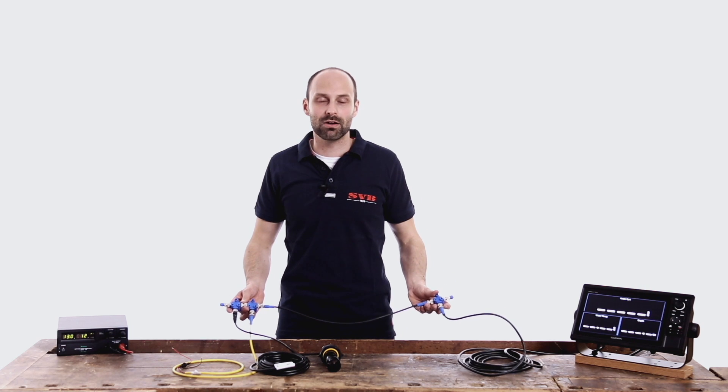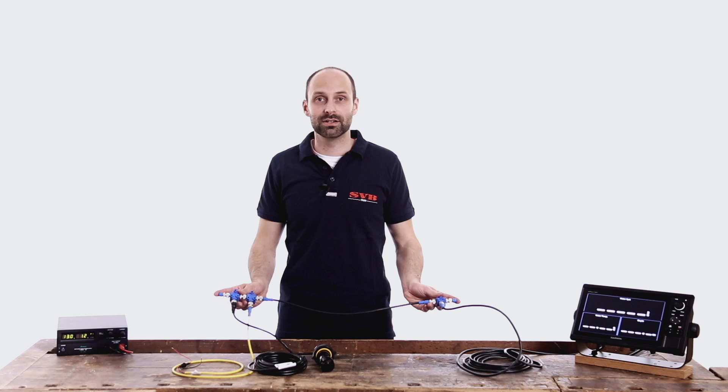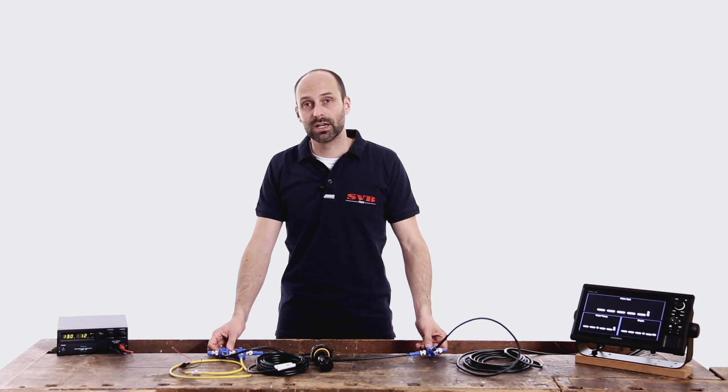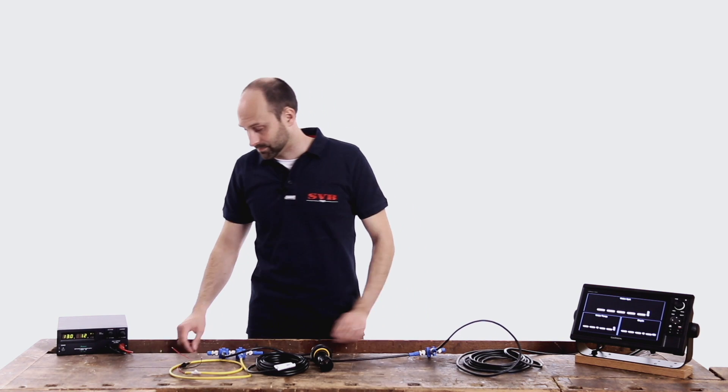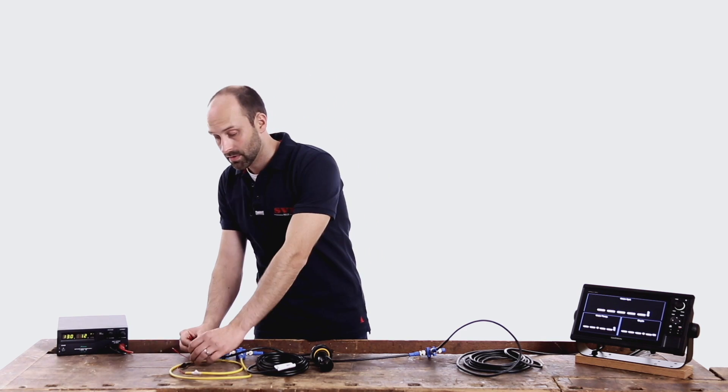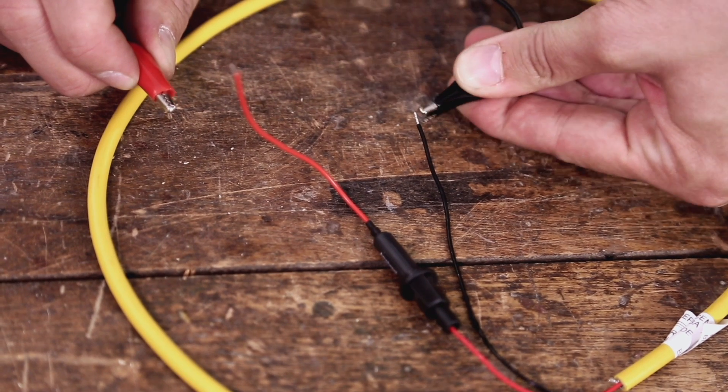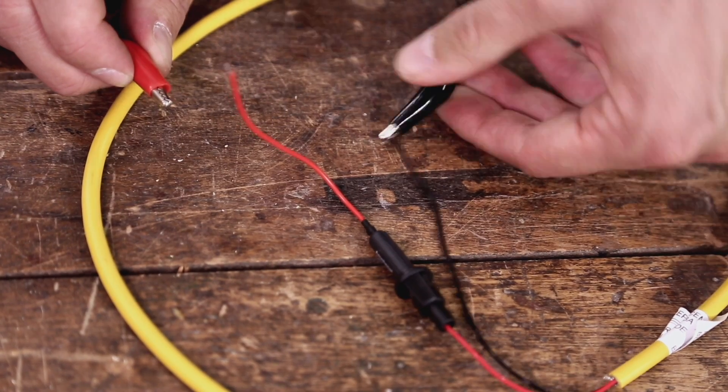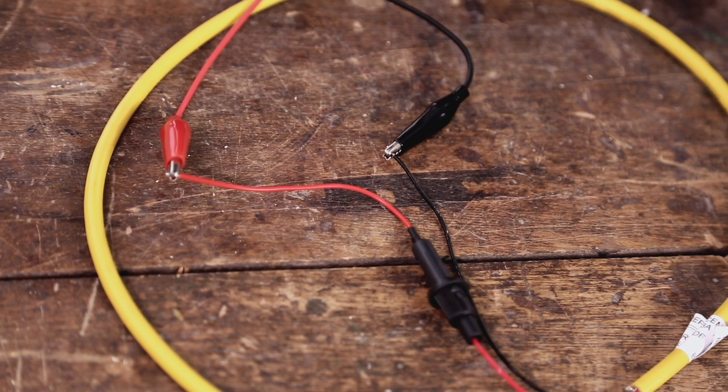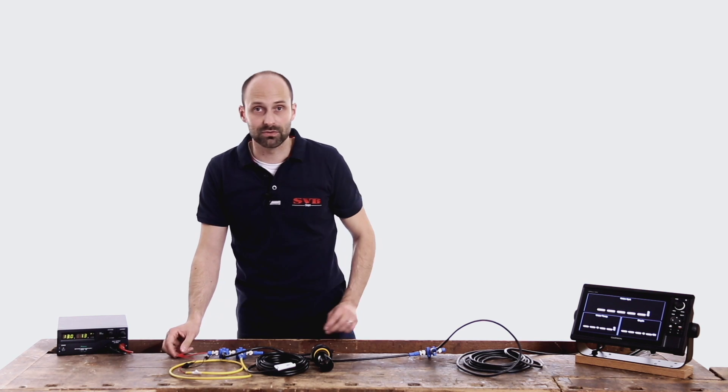After we have correctly assembled the backbone, all terminating resistors are fitted and end devices connected, we can then connect the network to a 12V power supply. To do so, connect the 12V negative with the black cable for the power supply of the backbone and the 12V positive with the red cable of the power supply for the backbone.